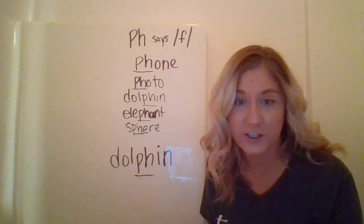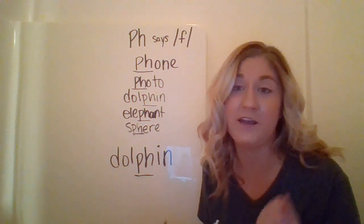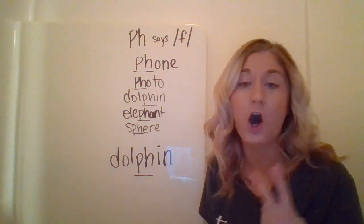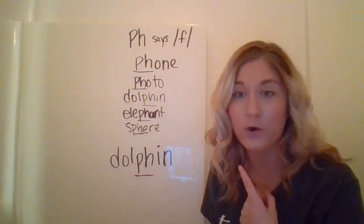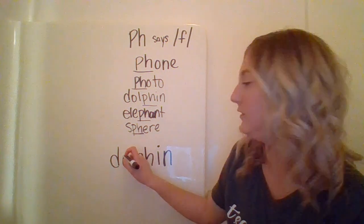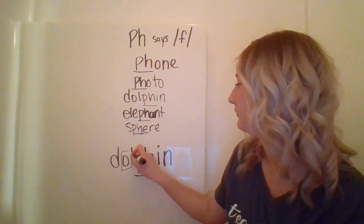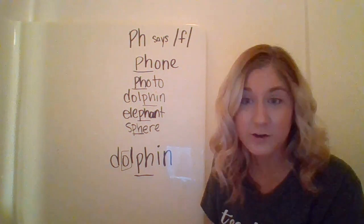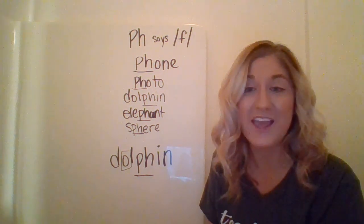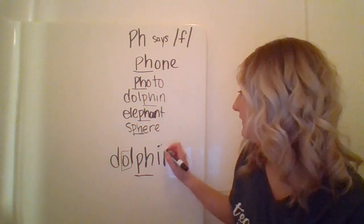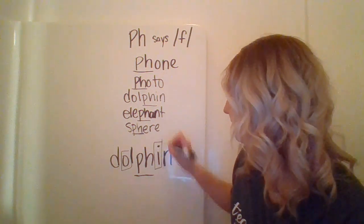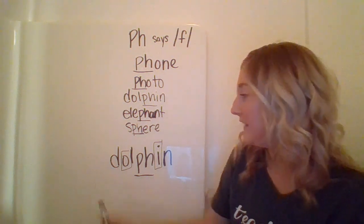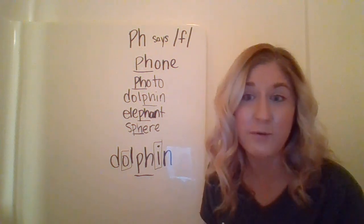I have my 'ph' underlined. Now I just need to look for my vowel sounds. When I say the word dolphin and go /ah/, I know that /ah/ is my vowel sound, and I'm going to box it. My other vowel sound is /ih/ — the I says /ih/ — that's my other vowel sound.